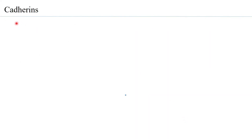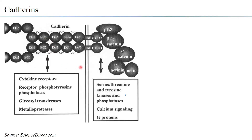Then there are cadherins. Cadherins are generally associated in cells to form adherens junctions, enabling interaction not just with another cell but also with the extracellular matrix. When you look at the structure of cadherins, you find several domains, and what is interesting is that each of these domains can be associated with calcium — which is how the name arises as calcium-based cadherins.